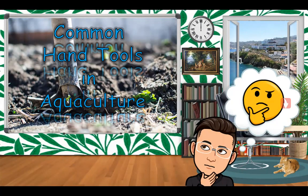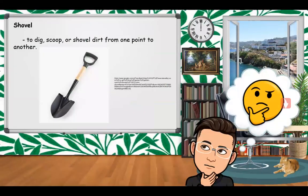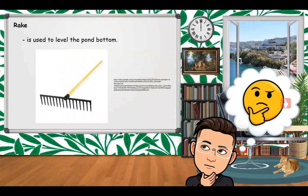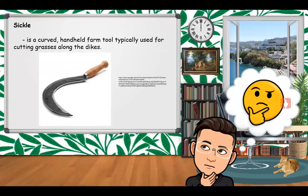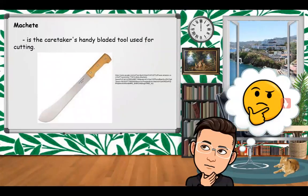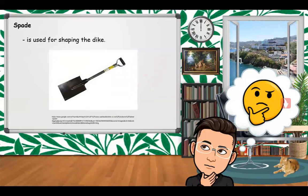Common hand tools used in aquaculture include: the shovel, used to dig, scoop, or move dirt from one point to another; the rake, used to level the pond bottom; the digging blade, used to make quadrangular mud blocks; the sickle, a handheld farm tool typically used for cutting grasses along the dikes; the machete, a bladed tool used for cutting tall grasses and tree branches; and the spade, similar to a shovel, used for shaping the dike.